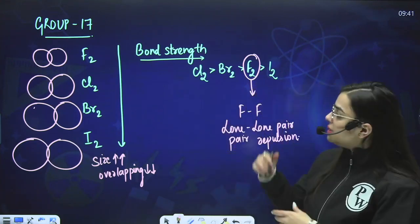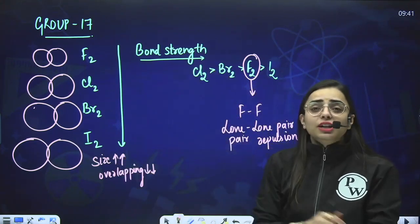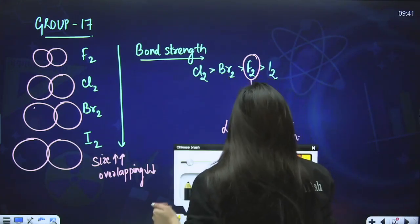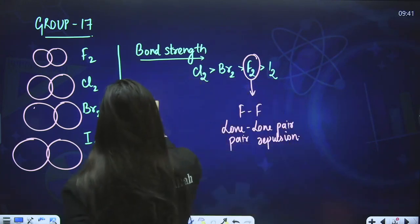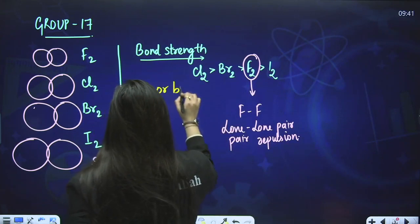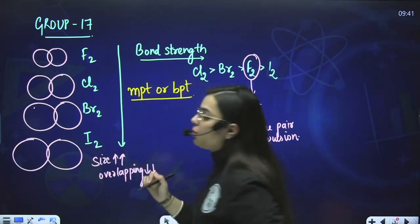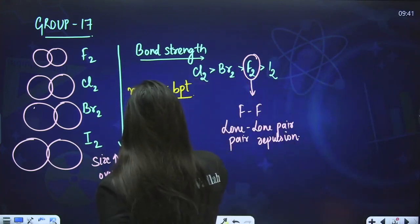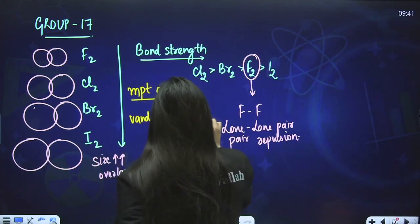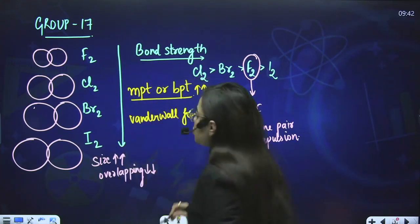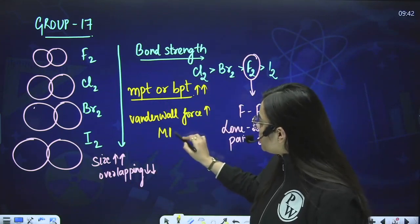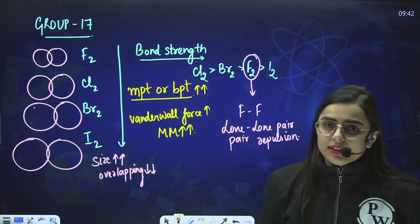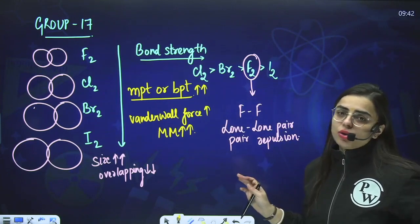Moving on to melting point and boiling point for F2, Cl2, Br2, and I2. Both melting point and boiling point depend upon Van der Waals forces. As you move down the group, Van der Waals forces increase, or you can say molecular mass increases. So the boiling point and melting point will automatically increase. Boiling point is directly proportional to molecular mass — more the molecular mass, more will be the boiling point.